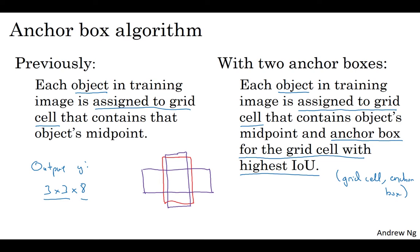And that's how that object gets encoded in the target label. And so now the output Y is going to be 3 by 3 by 16, because as you saw on the previous slide, Y is now 16 dimensional. Or if you want, you can also view this as 3 by 3 by 2 by 8, because there are now two anchor boxes and Y is 8 dimensional. And dimension of Y being 8 was because we have three object classes. If you have more objects, then the dimension of Y will be even higher.